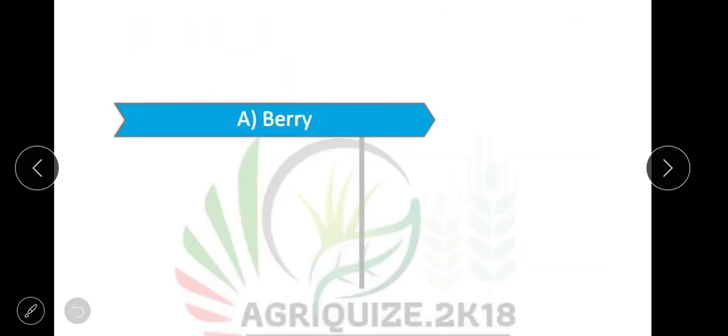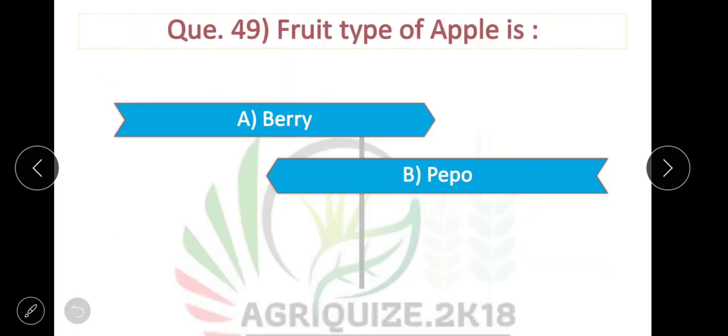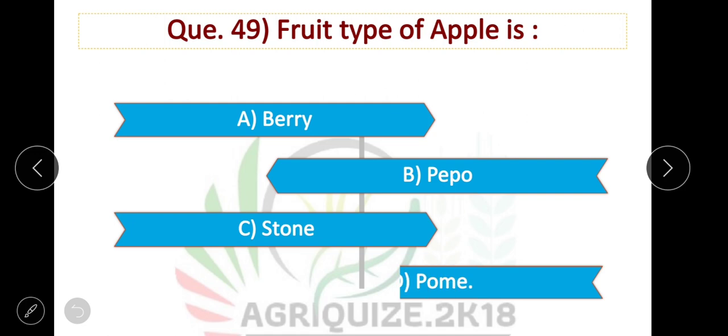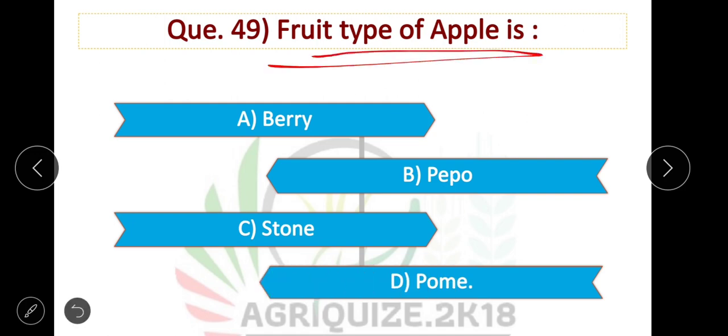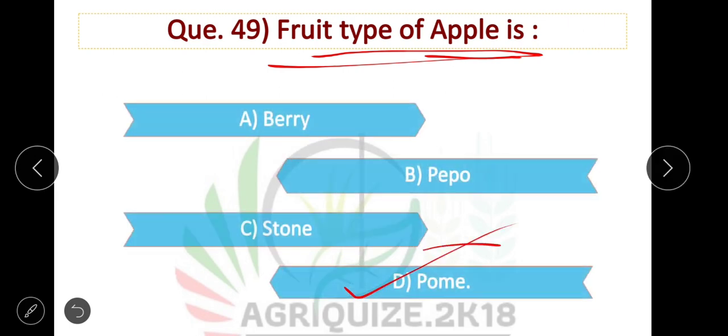Question number 49: The fruit type of apple is a pome. Option D is correct.